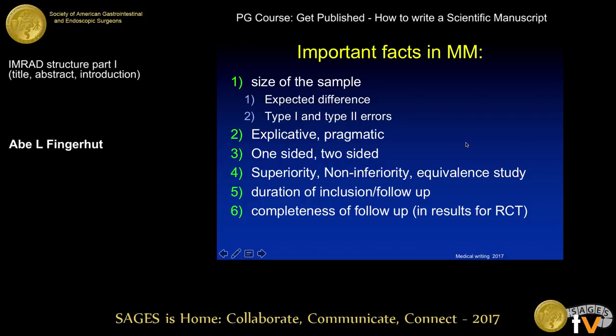Very important in material and methods is the size of your sample. If it's a randomized controlled trial you have a power calculation — you can also do power calculations for case-control studies. The power calculation makes use of the expected difference, or delta, and the type one and type two errors. Don't be intimidated by statistics. You have to know what a type one error is and what a type two error is. It's important.